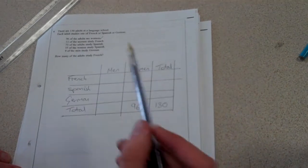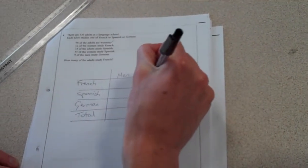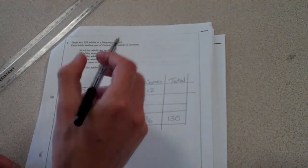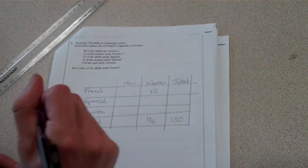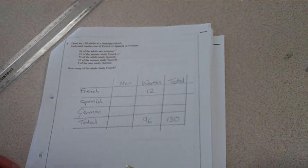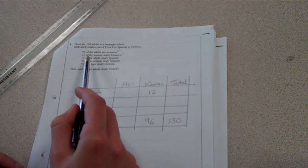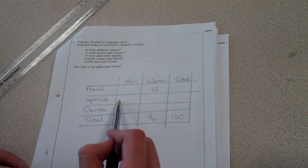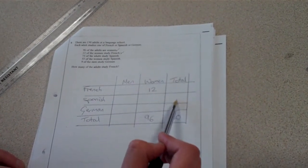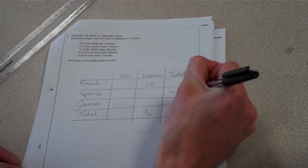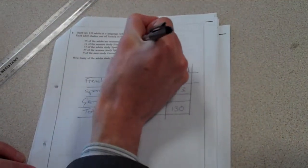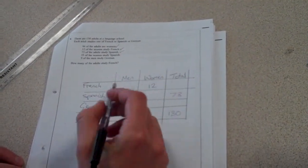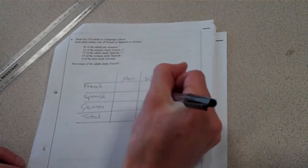So we have 12 women that study French. We put 12 in the box between women and French. Tick. Again, maybe I'd say I've done it. I wouldn't cross out, because you might need to read the question when you're checking through at the end. 73 of adults study Spanish. So the total number doing Spanish here is 73. 55 of the women study Spanish. So Spanish, women, 55.